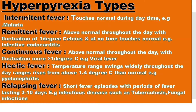The fourth one is hectic fever, where the body temperature rises with swings ranging above 1.4 degrees Celsius. Example: pyelonephritis. The fifth one is relapsing fever, which means short episodes of fever that may last for 3 to 10 days. This happens due to tuberculosis and fungal infection.